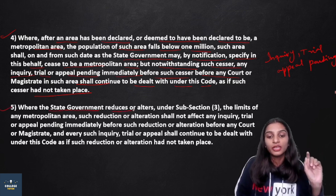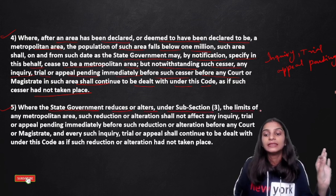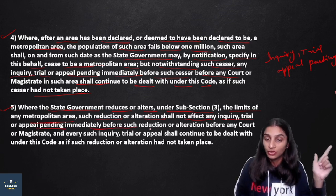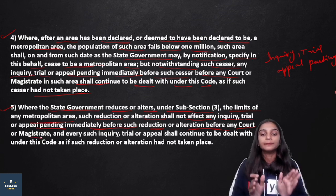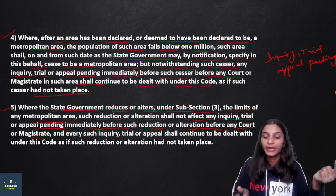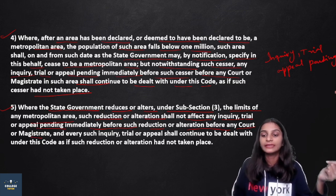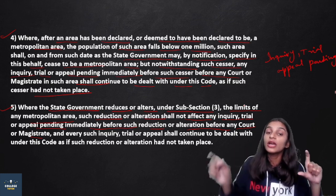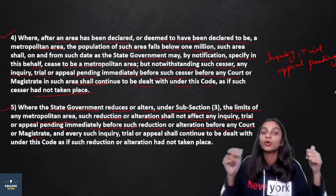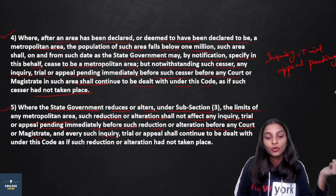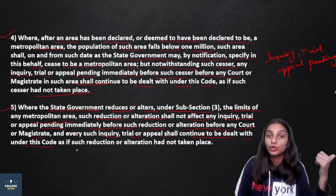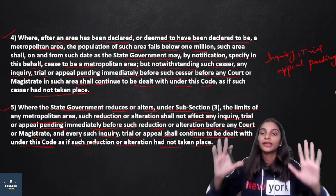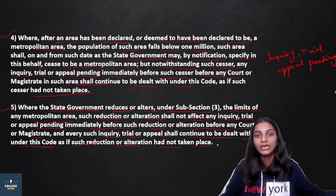Subsection 5: where the state government reduces or alters, under subsection 3, the limits of any metropolitan area, such reduction or alteration shall not affect any inquiry, trial, or appeal pending immediately before such reduction or alteration before any court or magistrate. Any such inquiry, trial, or appeal shall continue to be dealt with under this code as if such reduction or alteration had not taken place — just as if it is still a metropolitan area.